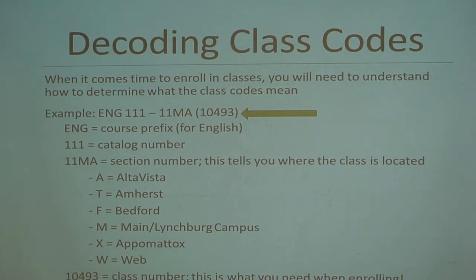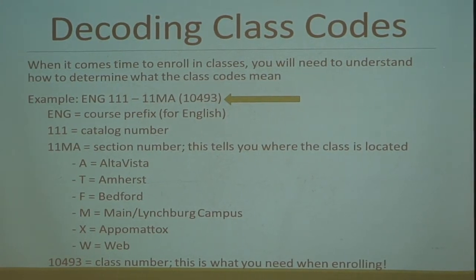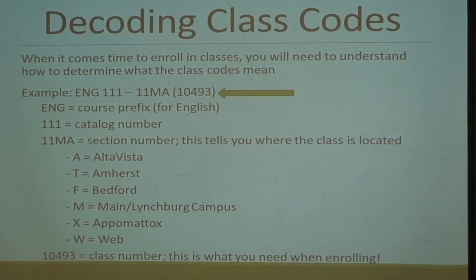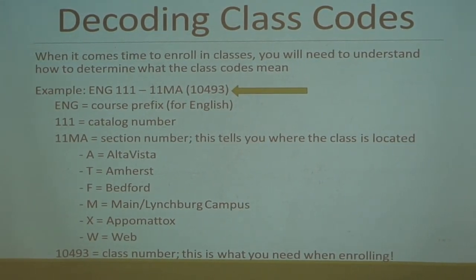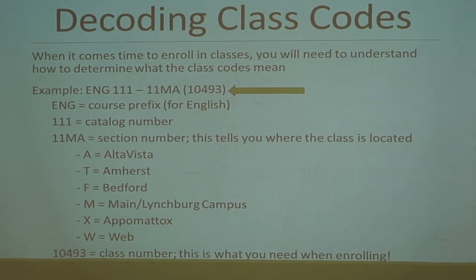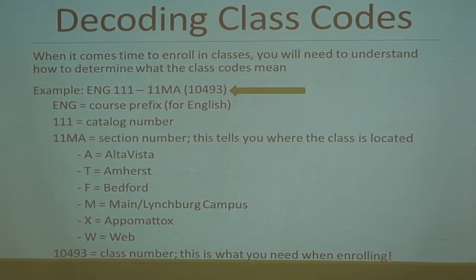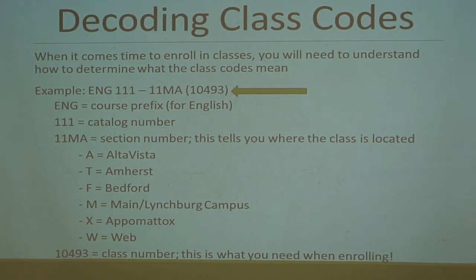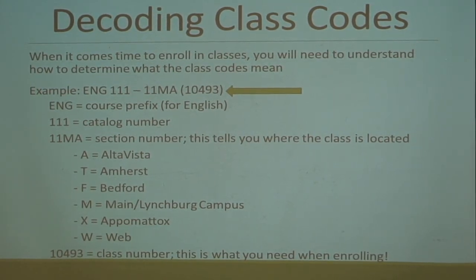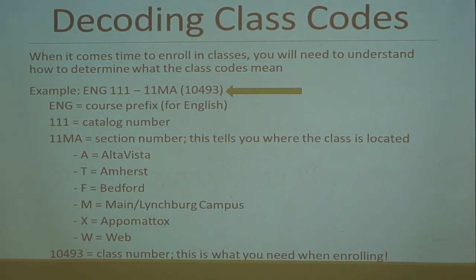When looking at the schedule, there's a lot of information associated with each class, so let's decode that. Using English 111, section 11M, as an example — in parentheses is 10493, which is the class number, that five-digit number you need when enrolling. ENG is the course prefix for English. 111 is the catalog number, which is for Composition I. The section number contains a letter that tells you where the class is located: A is for Alta Vista, T is for Amherst, F is for Bedford, M is for the main Lynchburg campus, X for Academics, and W means it's a web class.